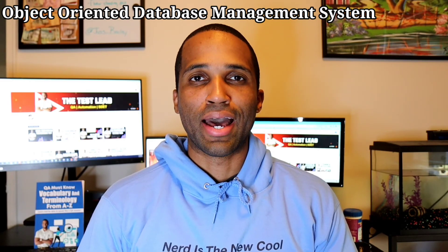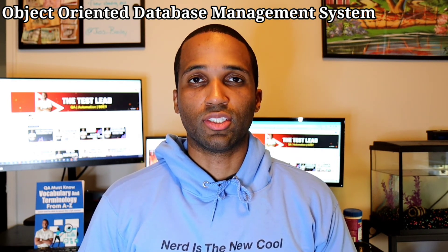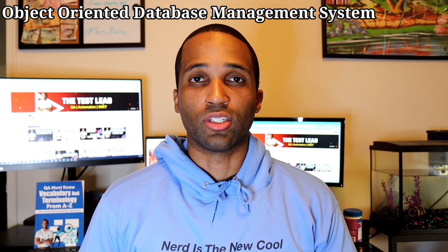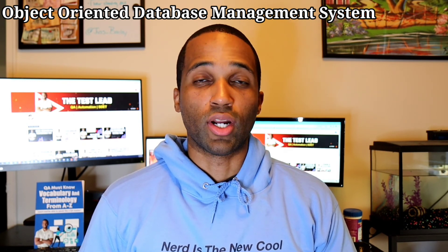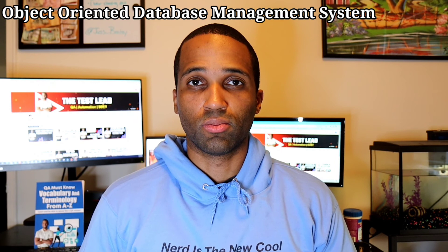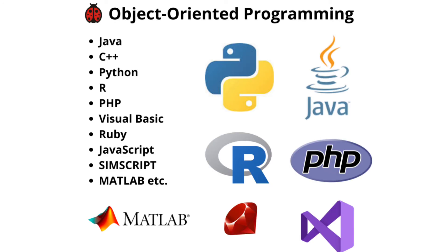Next up, object-oriented database management systems. This type stores information in the form of objects. As the name states, it is based on object-oriented programming, so the objects also have members. It stores both data members' values and operations. The members can include methods, properties, and fields. It works in concert with an object-oriented programming language to facilitate the storage, addition, and retrieval of object-oriented data.